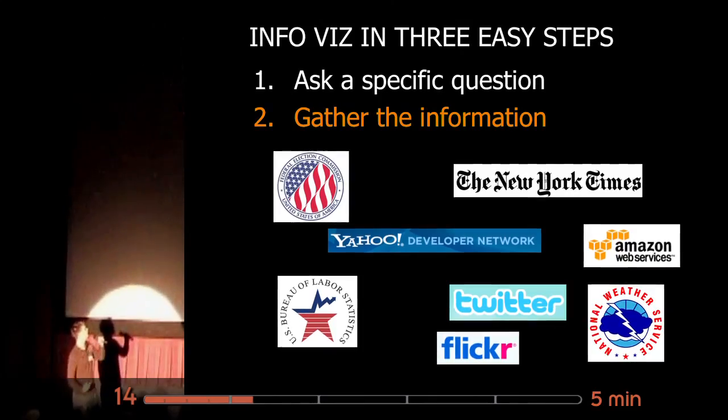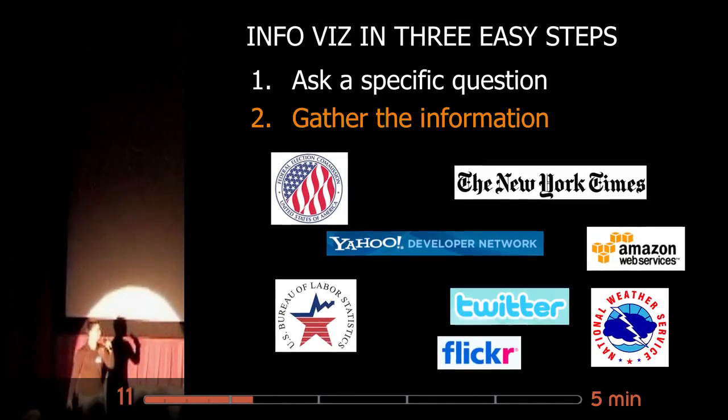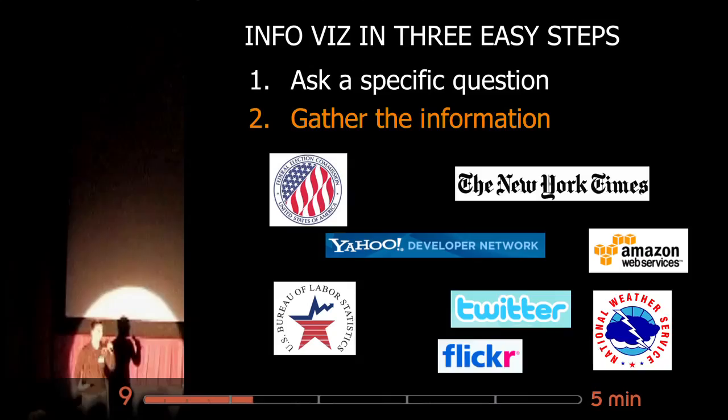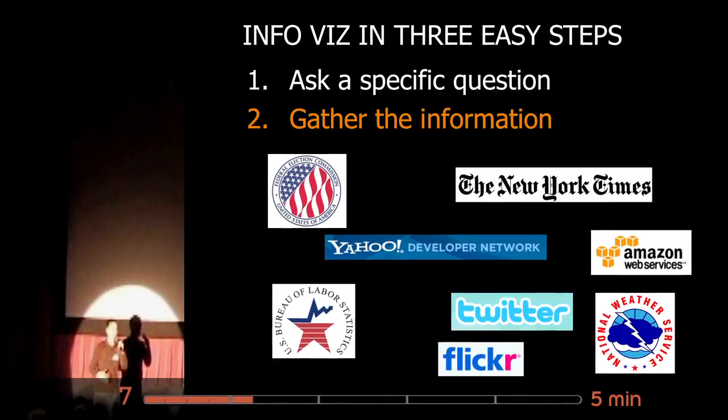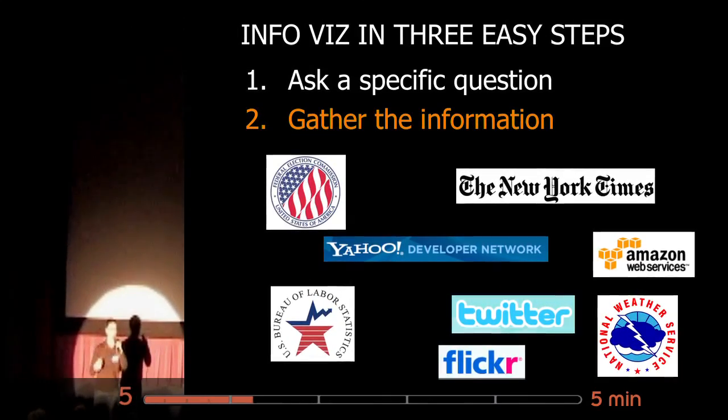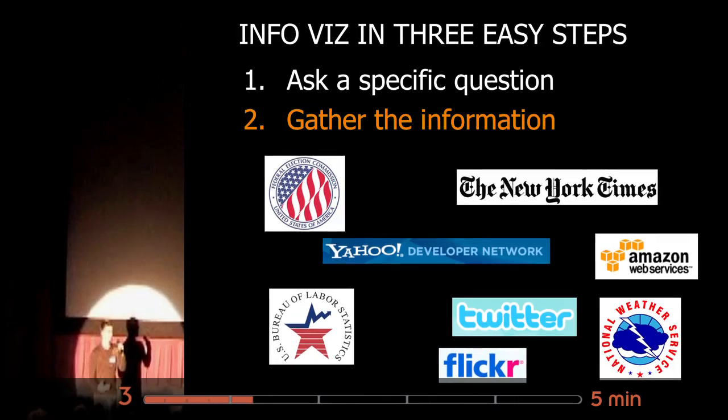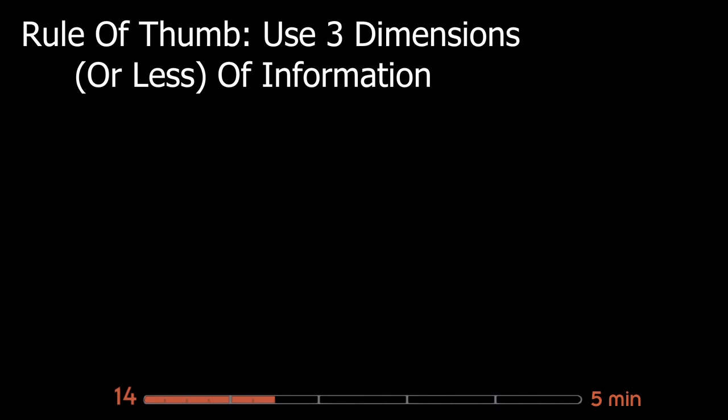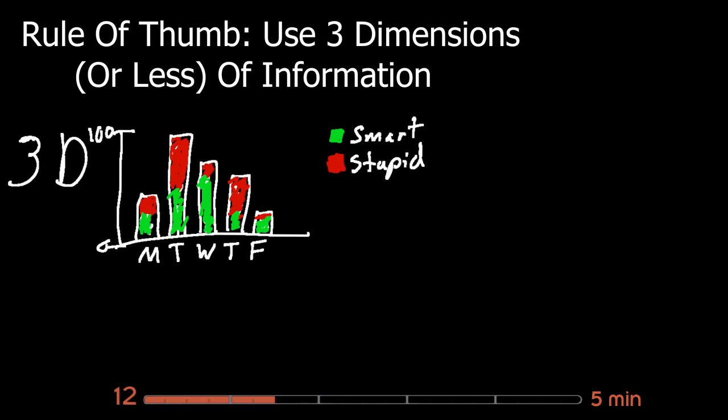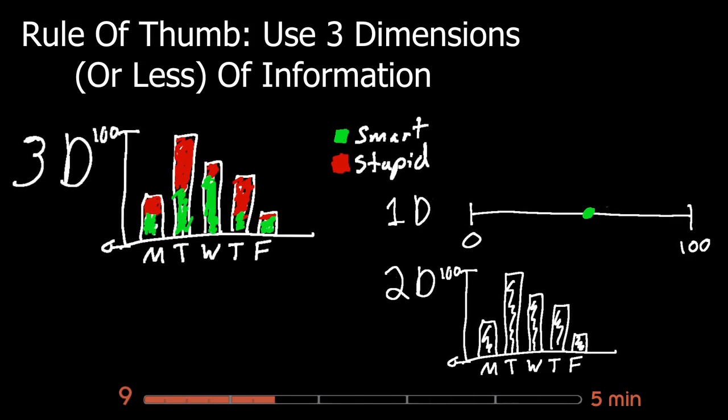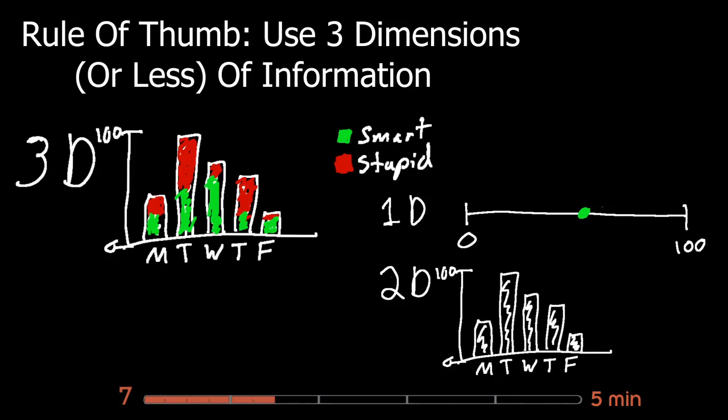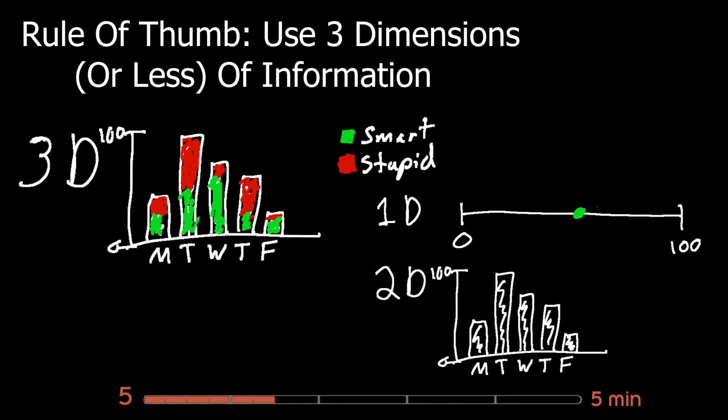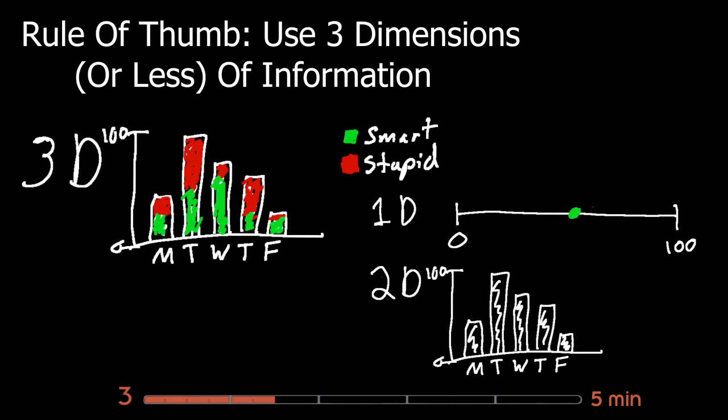So the next step is to start gathering information. These are all great places to get some information. But you want to remember that if the information you're gathering isn't telling your story, then it's not really that useful to you. As a rule of thumb, I like to stick to three dimensions of information. We see in three dimensions and we also understand information in smaller bits. When we gather more than we need, we run the risk of putting unnecessary details in the story we're trying to tell.